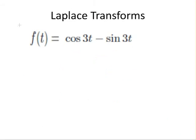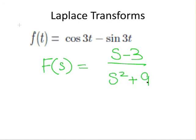To sum up, the answer is F(s) equals s minus 3 over s squared plus 9. That's the correct answer to this problem. And that ends the presentation.